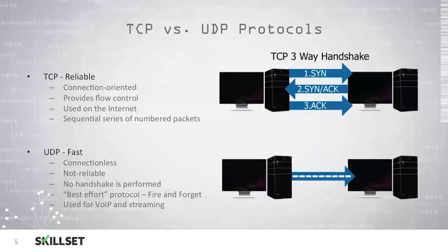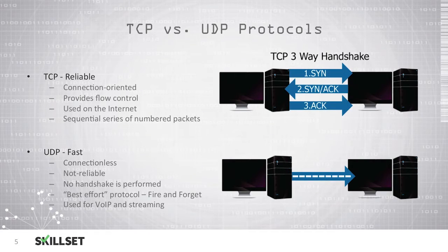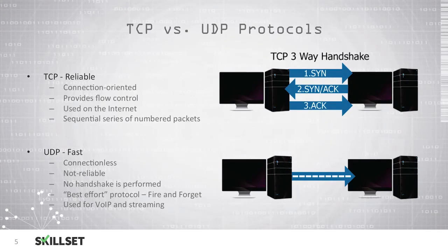For the CISSP examination, you should remember that TCP is much more reliable but is slower than UDP, and UDP is much faster but is not as reliable as TCP.